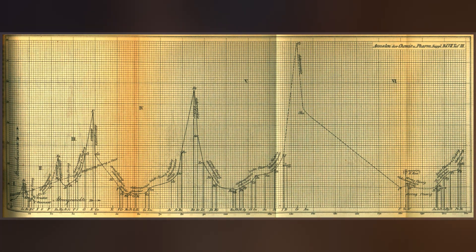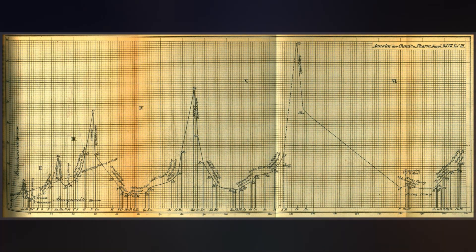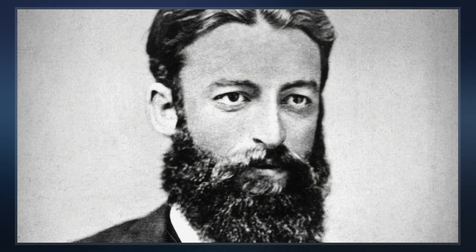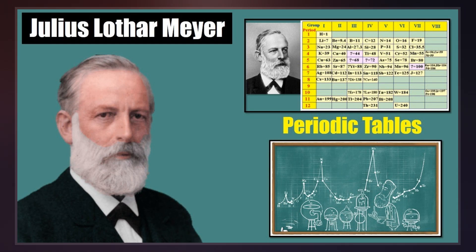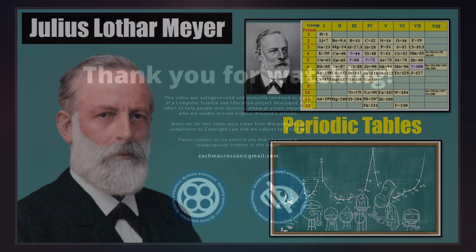After graduating as a doctor of medicine from Würzburg in 1854, he went to the University of Heidelberg, where Robert Bunsen held the chair of chemistry. In 1858, he received a Ph.D. in chemistry from the University of Breslau with a thesis on the effects of carbon monoxide on the blood.